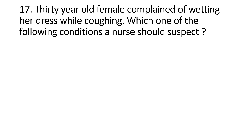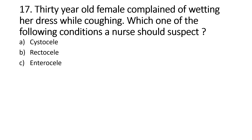A 30-year-old female complains of wetting her dress while coughing. Which one of the following conditions should a nurse suspect? Option A, Cystocele; Option B, Rectocele; Option C, Enterocele; Option D, Urethrocele. Right answer is Option A, Cystocele. Bladder prolapse presents with urinary frequency, urgency, and dysuria.